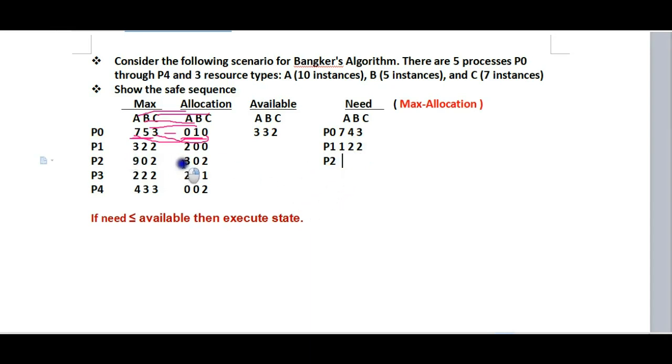For P2, Need is 6-3=3, 0-0=0, 0-0=0, giving us 3,0,0. For P3, Need is 2-2=0, 1-1=0, 1-1=0, but wait - let me recalculate: it's 0,1,1. For P4, Need is 4-4=0, 3-3=0, 3-1=2, giving us 0,0,2.